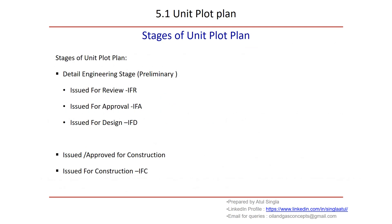This slide is about the stages of unit plot plan. As we discussed during our discussion on overall plot plan, similar stages exist for unit plot plan also. We divide it into two parts: primary stage and final stage. During the preliminary stage, we don't have final information related to equipment — sometimes we have PFDs only. Based on that raw information, we start developing our unit plot plan. The first step is to understand the process sequence based on PFDs or P&IDs and start locating our equipment.